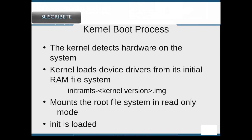After the Linux kernel gets control of the boot process from GRUB, it detects the hardware installed on the system and loads its RAM filesystem from the system boot partition. This RAM filesystem contains device drivers and other important scripts and binary utilities that aid in the system boot process. The RAM filesystem filename begins with initramfs, then the kernel version number, followed by .img.